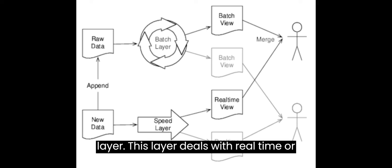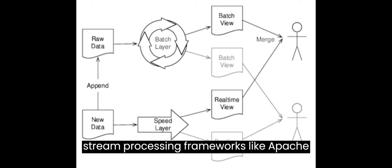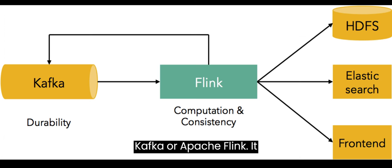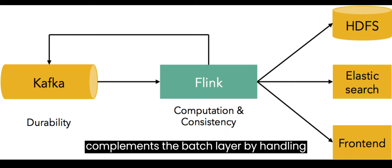Speed layer: This layer deals with real-time or near-real-time data processing using stream processing frameworks like Apache Kafka or Apache Flink. It complements the batch layer by handling recent data.